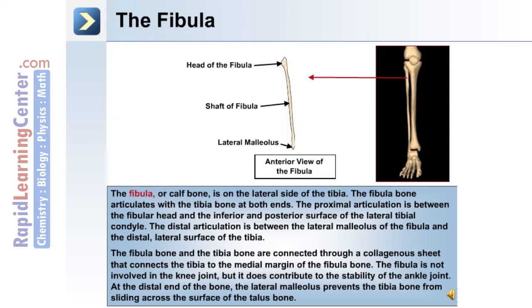At the distal end of the fibula, the lateral malleolus prevents the tibia bone from sliding across the surface of the talus bone.